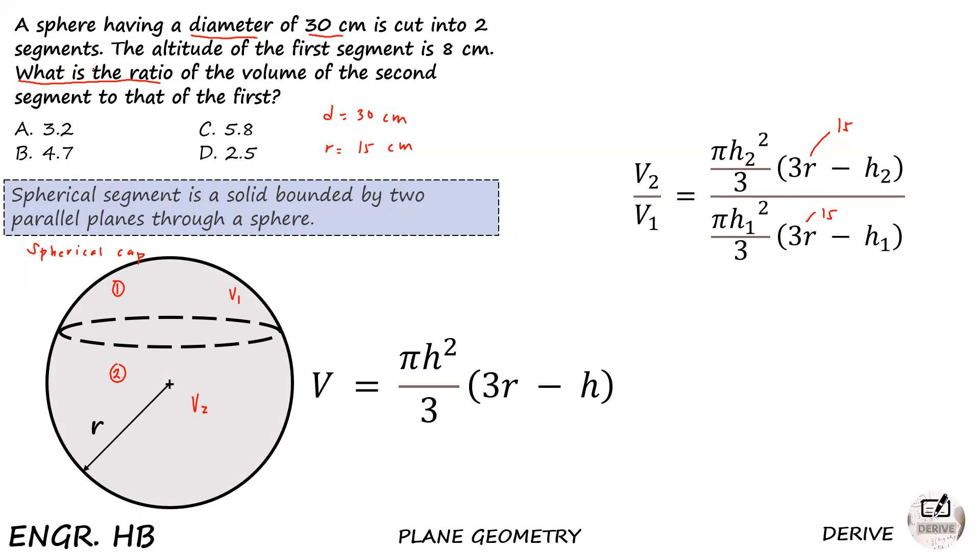So what is this small h? Look at the problem again. It says the altitude of the first segment is 8 cm. So what is the first segment? This is the first segment. So that altitude is this. This is like the height of the segment. From the word itself, altitude is the same as the height. So that is your height. Let's call it h₁, h sub 1, because it represents the height or altitude of the first segment. So our altitude of the first segment is 8 cm. This means our h₁ is 8 cm, and this is 8 cm.